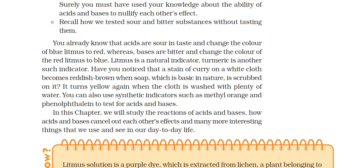Litmus is a natural indicator. Turmeric is also an indicator. If you have noticed, if you use stains on cabbage or some vegetables, they will turn brown when you use soap, which is basic in nature. It turns reddish-brown when scrubbed on it. It turns yellow again when you wash with a lot of water.